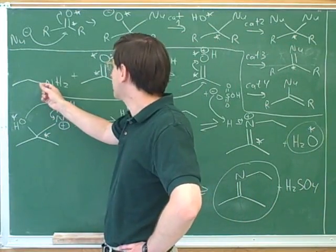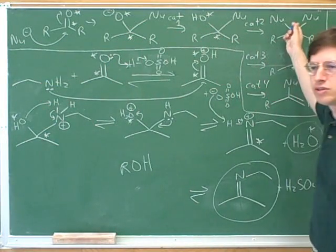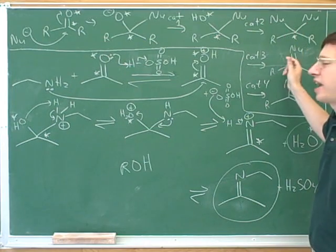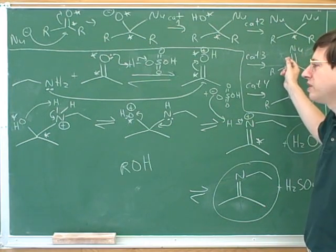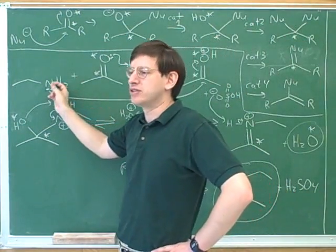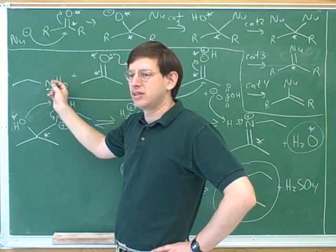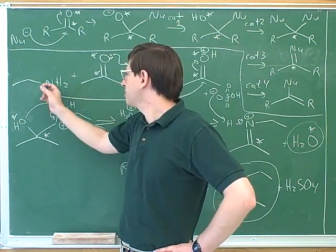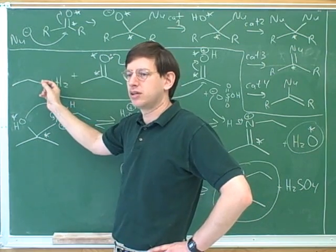All right, so what types of nitrogens are going to be able to go through this Category 3 type reaction? Only nitrogens that have at least two hydrogens. So what type would that be? What type of nitrogen was this, primary, secondary, or tertiary? Primary. This is primary.